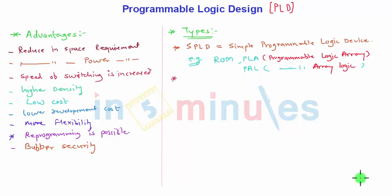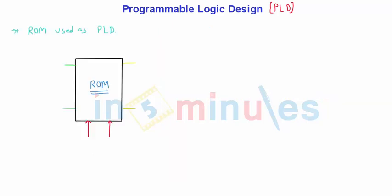The next type is CPLD—Complex Programmable Logic Device. The last one is FPGA—Field Programmable Gate Array. This is all about programmable logic design, the advantages and their categories. Now we will see what is ROM, PLA, PAL, CPLD, and FPGA in different sessions. In this session, we're going to focus on ROM.